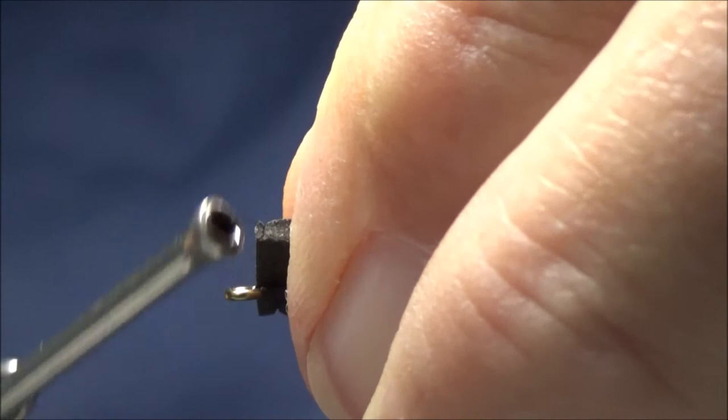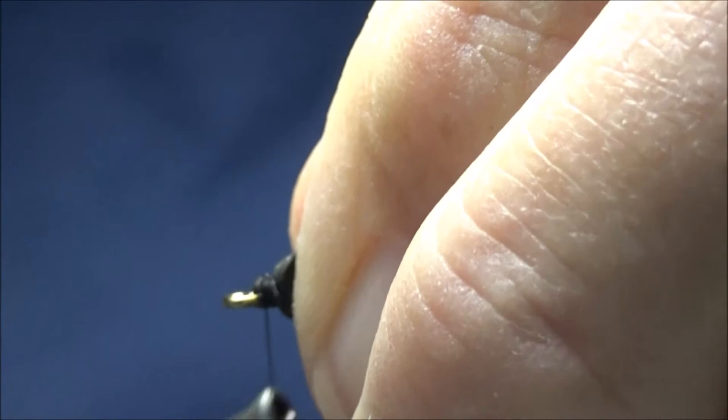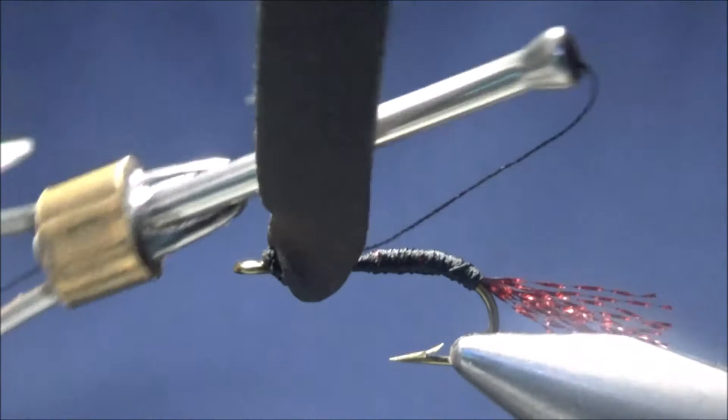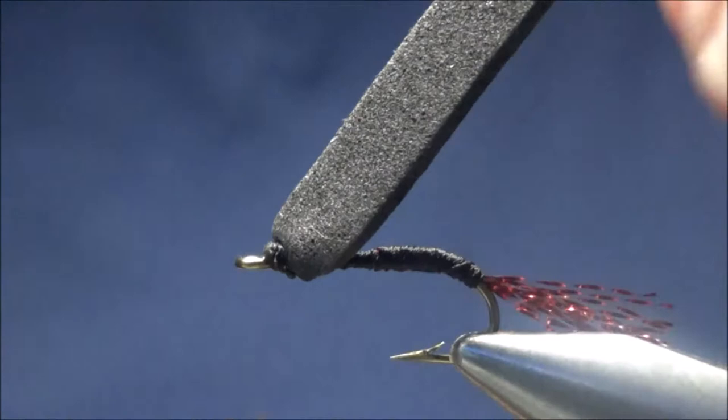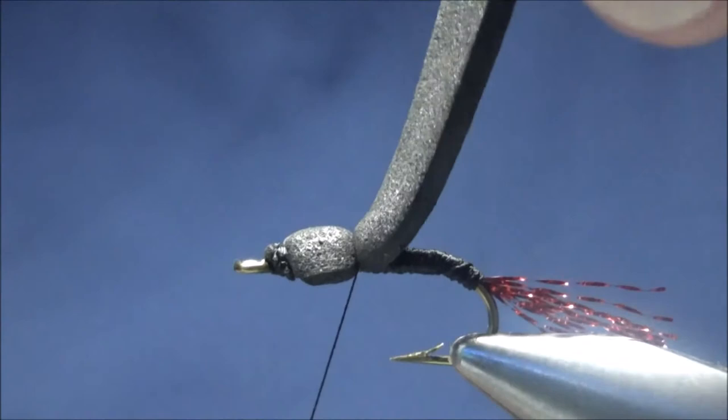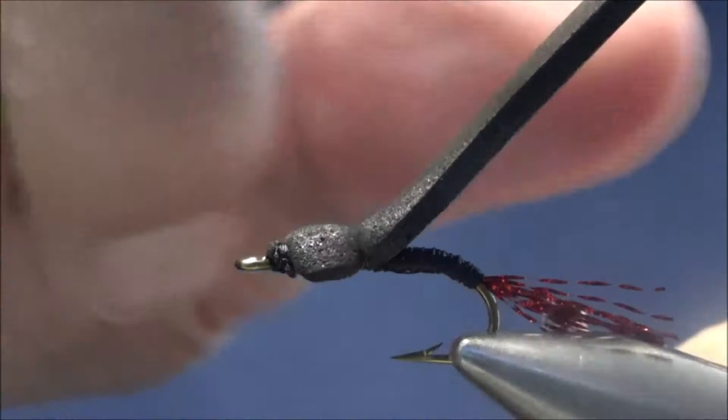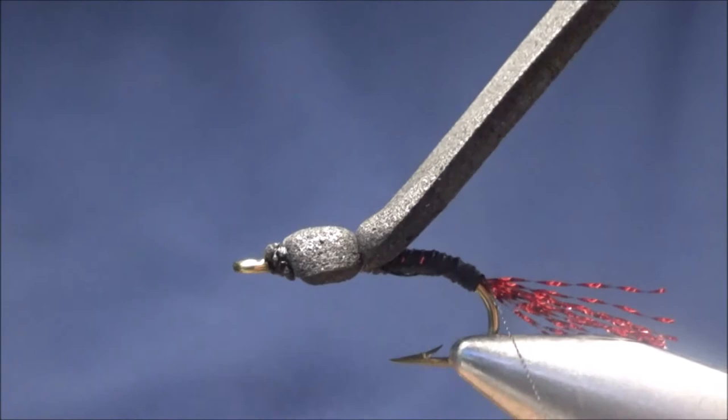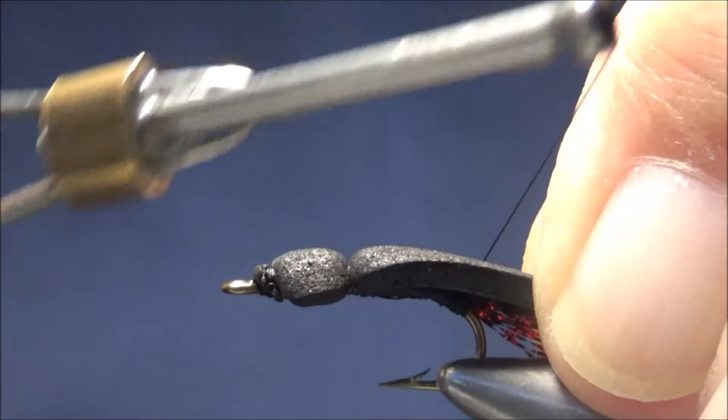I'm going to tie it down right behind the eye. Then I'm going to lift it up, bring my thread back a couple wraps to about the one-third point on the shank. I'm going to bring my foam back down and lash it in place at this point. Then again, I'm going to bring my thread underneath the foam all the way down to the end of the body, and again I'm going to lash it down.